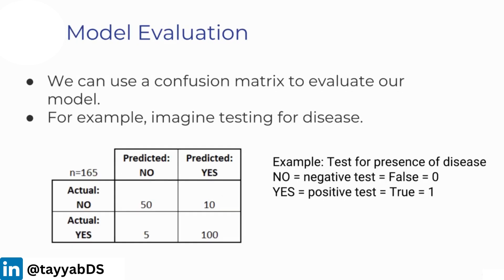Let's use a confusion matrix to evaluate our model. Let's imagine now we're testing for a disease. In this example, we're going to test for the presence of a disease. We have actual patients come in, and remember this is supervised learning. Before we actually run them through the testing program, we already know the true conditions of these patients, whether or not they have the disease. You can imagine we're testing a new diagnostic tool.